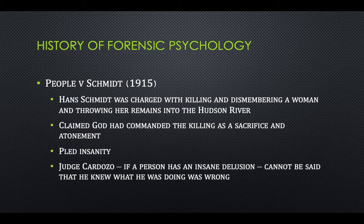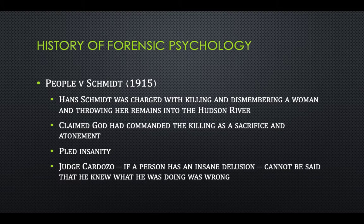In 1915, in People v. Schmidt, Hans Schmidt was charged with killing and dismembering a woman and then throwing her remains into the Hudson River. He claimed God had commanded the killing as a sacrifice and atonement, and so he pled insanity in court. Judge Cardozo was the judge at the time — he later went on to be a Supreme Court justice — and he said that if a person has an insane delusion, they cannot be said to know what they were doing was wrong.